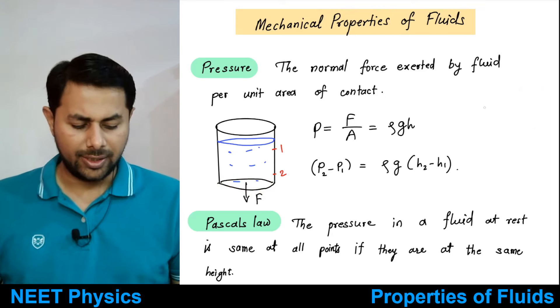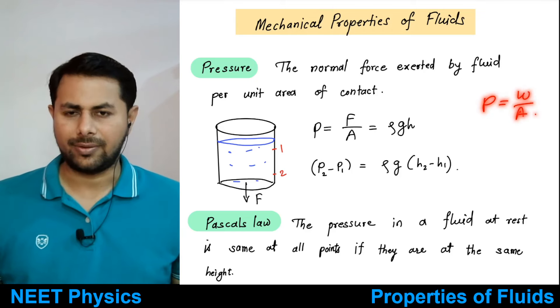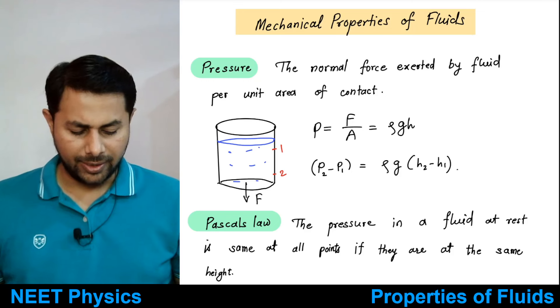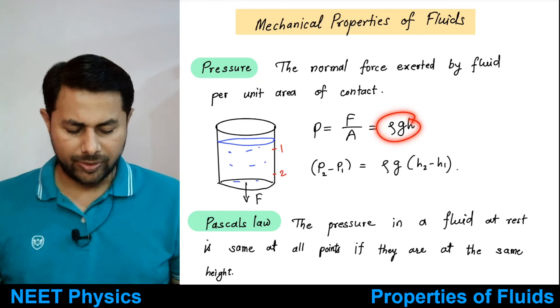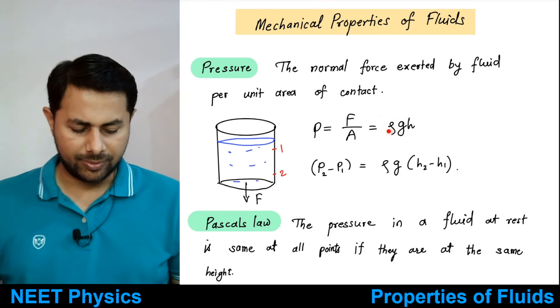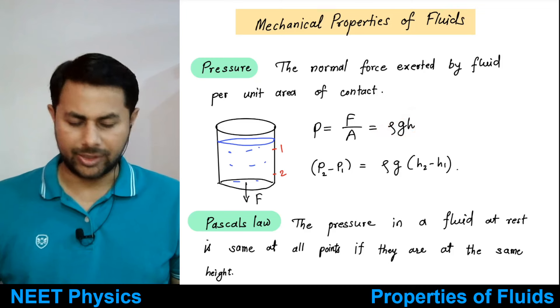That weight is equal to mg, and if you divide that by area, then that is the pressure. So pressure is equal to weight divided by area, and it comes out to be equal to rho g h.